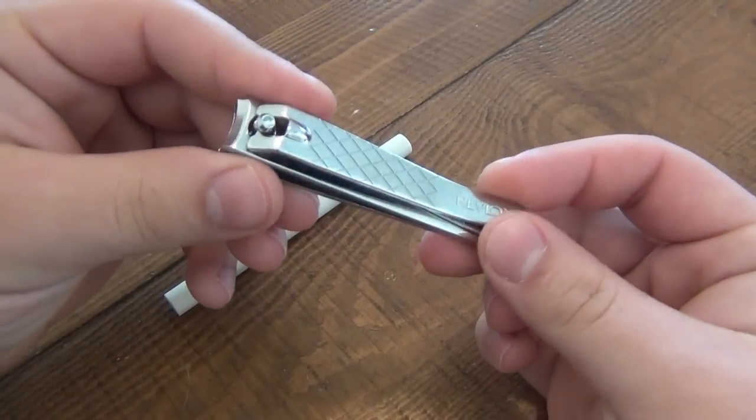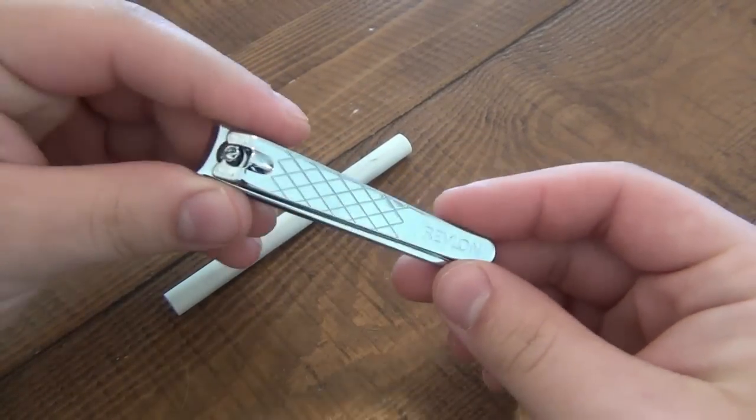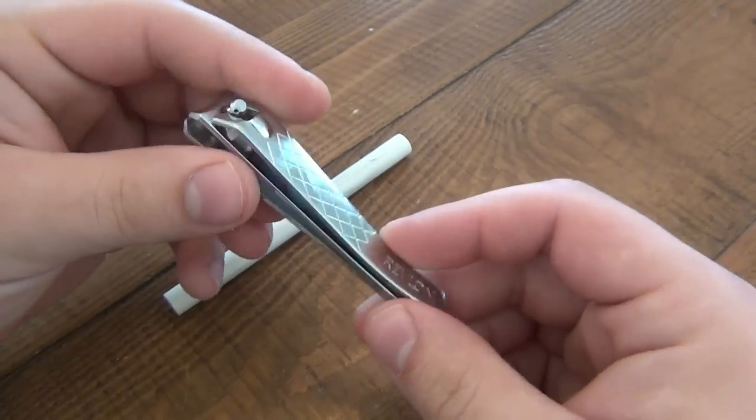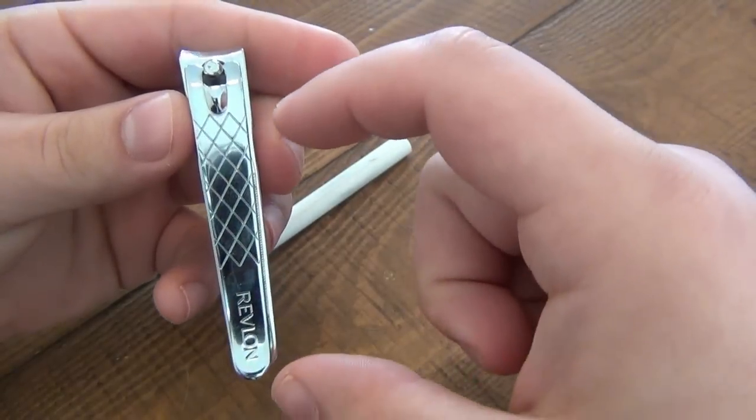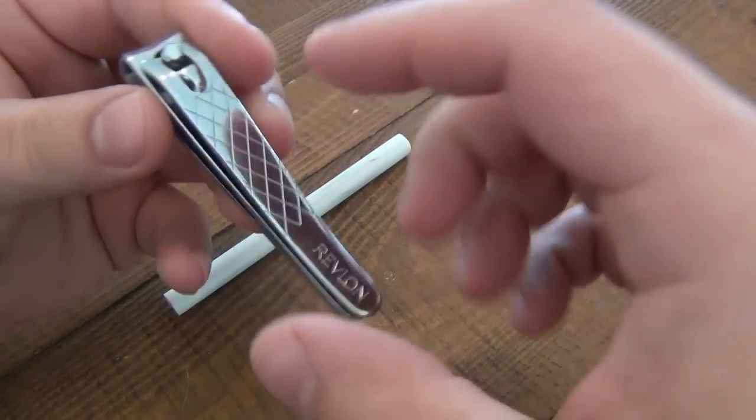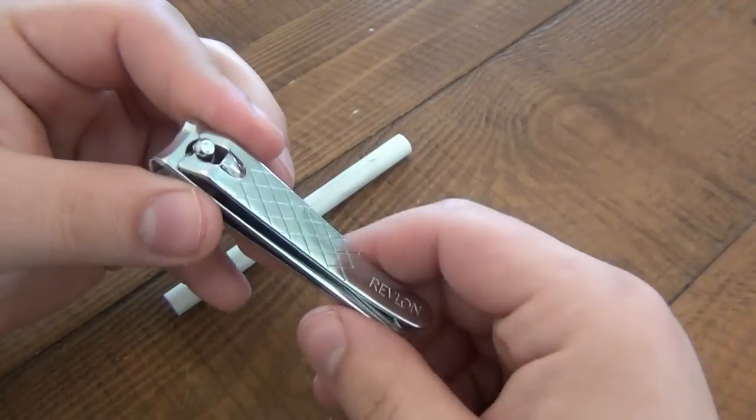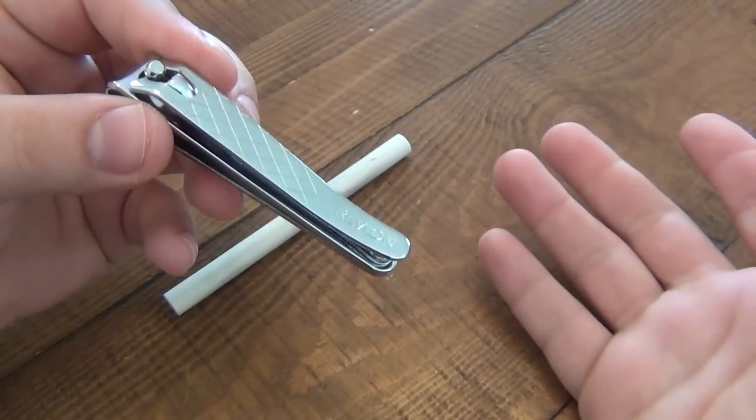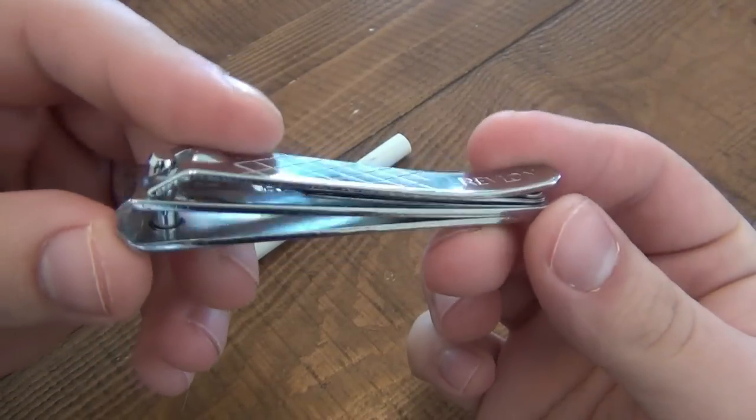The first thing to show you is that these are not nail clippers - these are actually toenail clippers. I'm using these for reference. Fingernail clippers would be a lot shorter like this. Toenail clippers are bigger, literally just because your toes are a little bit bigger. Anyway, I'm using this for reference purposes.